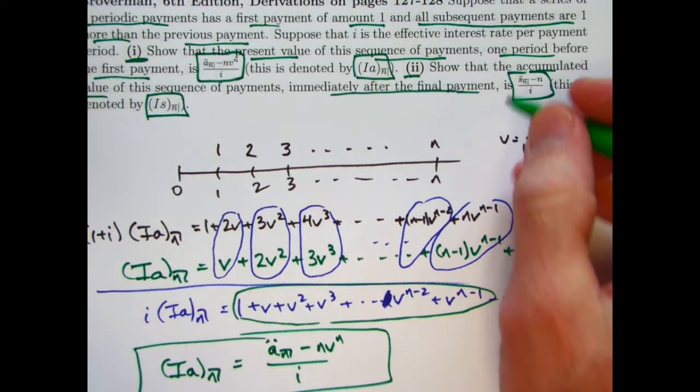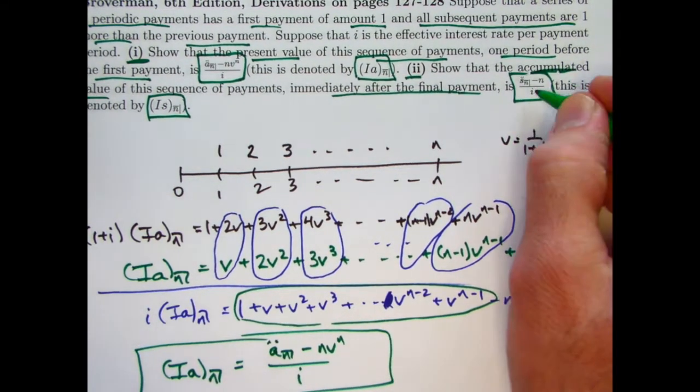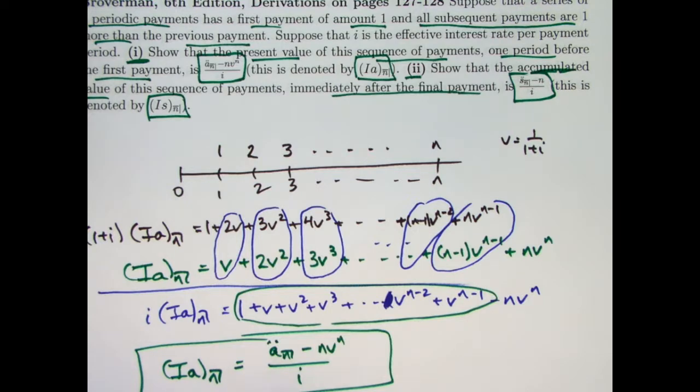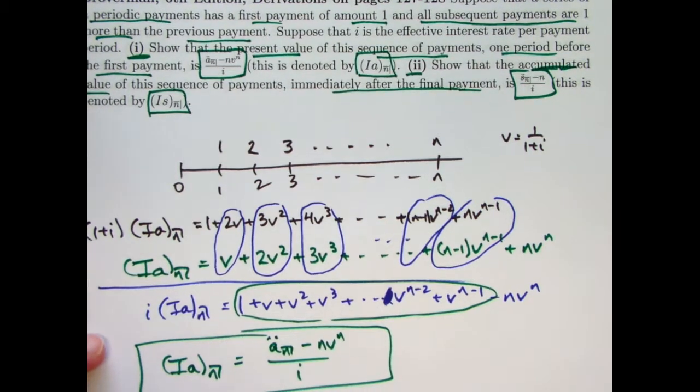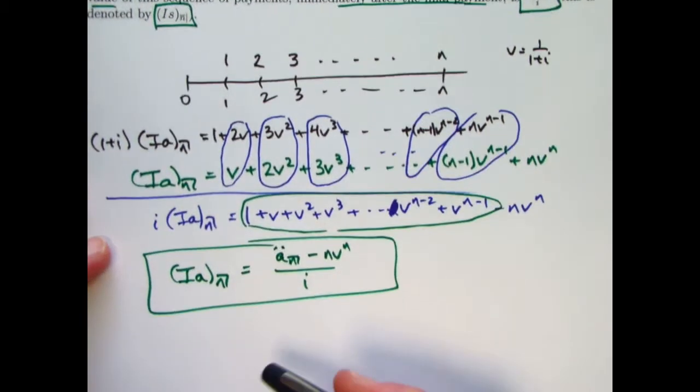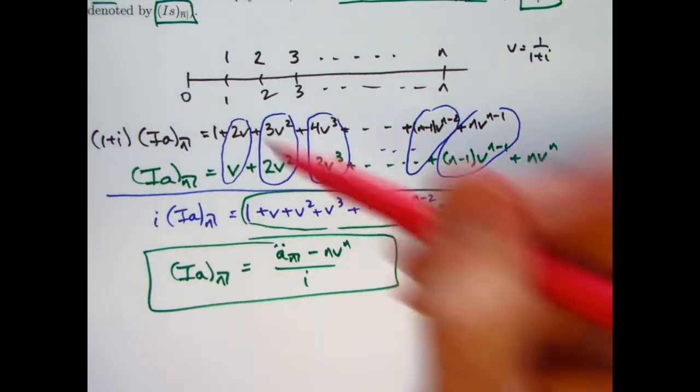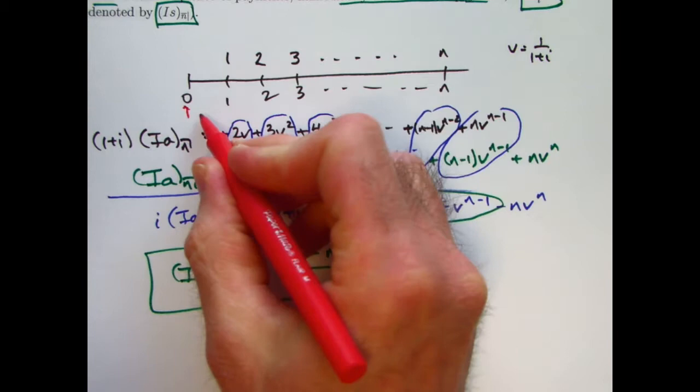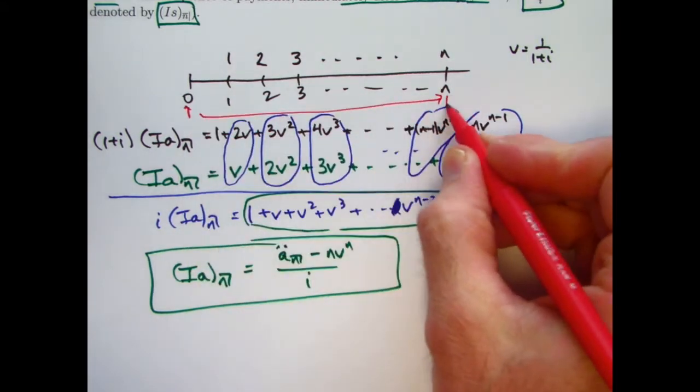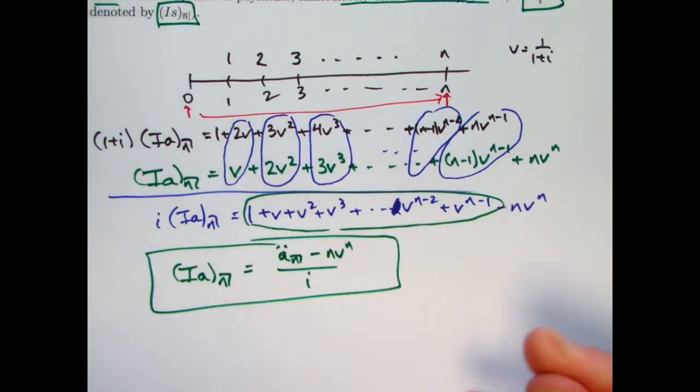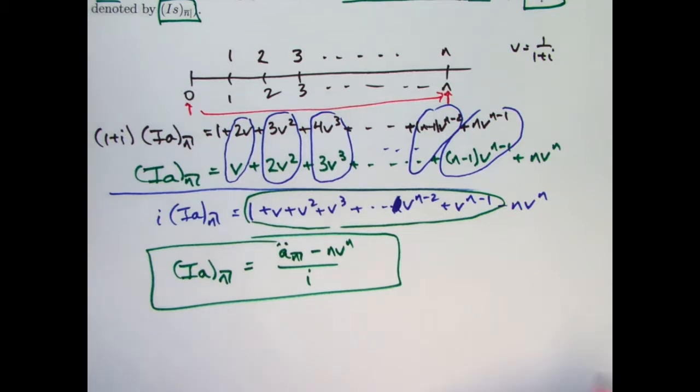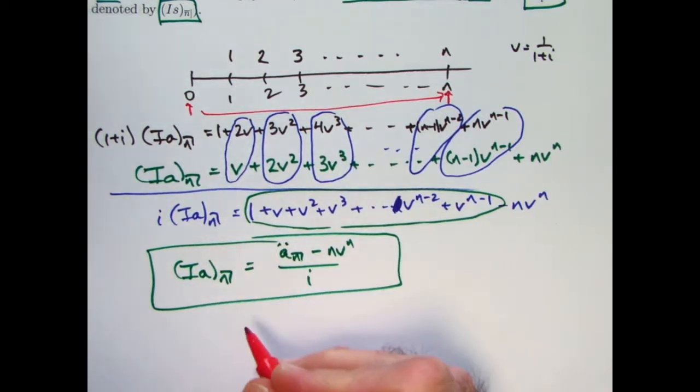We can do a similar derivation for the accumulated value to get this. But it's almost always easier to use what we've just done. This is the present value of this series of payments at time 0. If we want to promote it in time to time n and find its future or accumulated value immediately after that last payment, as an annuity immediate, we can just multiply both sides of this by 1 plus i to the n. Let's do that.